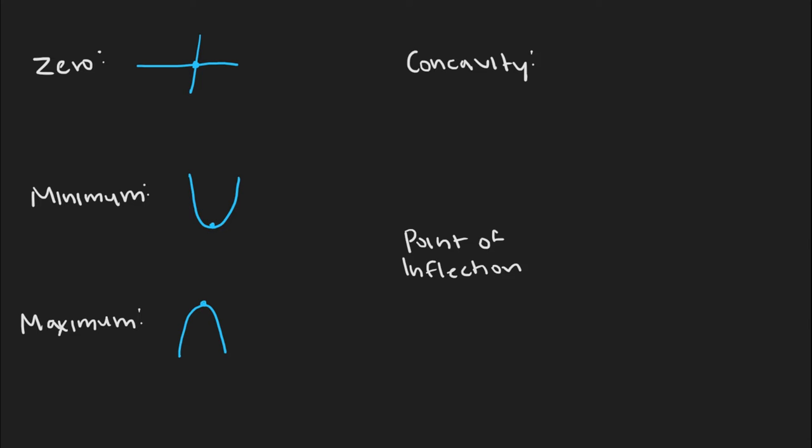Concavity might be new to you, and this refers to the way which the curve is facing. For me, the best way to think about this is that if the bowl is upright, if it looks like this or this, then we know that it's concave up. If the bowl is upside down, if it looks like this or like this, then we know that it's concave down.